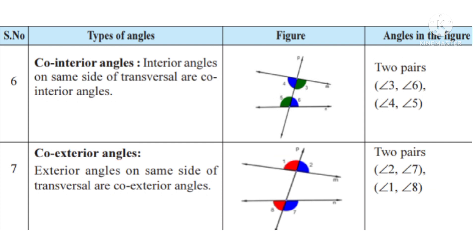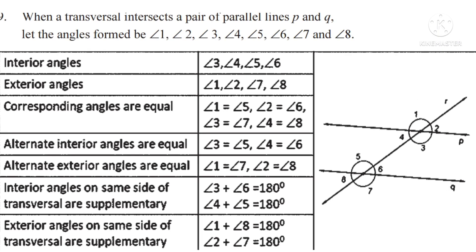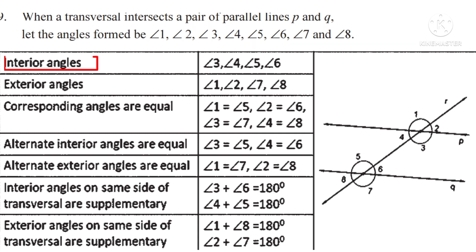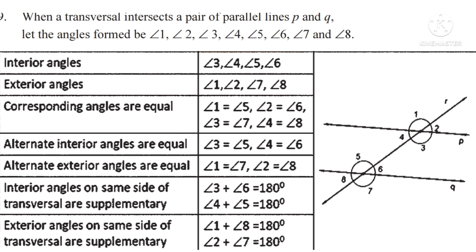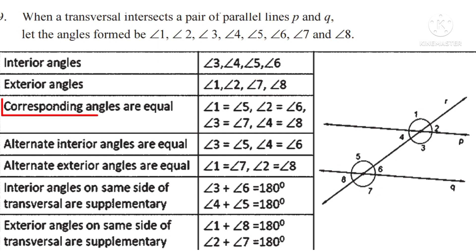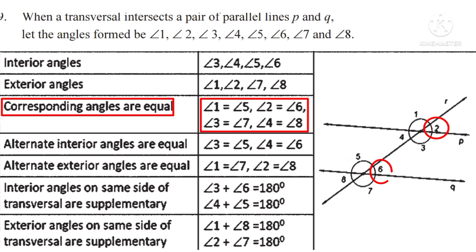Now let us see all types of angles when the lines are parallel. When a transversal intersects a pair of parallel lines P and Q, let the angles formed be angle 1, angle 2, angle 3, angle 4, angle 5, angle 6, angle 7 and angle 8. Interior angles are angle 3, angle 4, angle 5, angle 6. Exterior angles are angle 1, angle 2, angle 7 and angle 8. Corresponding angles are equal: angle 1 equals angle 5, angle 2 equals angle 6, angle 3 equals angle 7, and angle 4 equals angle 8.